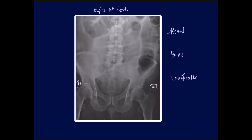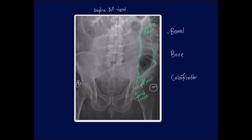Looking at the bowel, there is an obvious dilation of the large bowel — it is placed on the periphery, and you can notice haustra folds that are not fully reaching across the lumen. At the same time, there is a narrowing — a cut-off point — which, going by the anatomy, is in the sigmoid colon. This cut-off point suggests some kind of malignancy, tumor, or abscess blocking that region and causing large bowel obstruction.